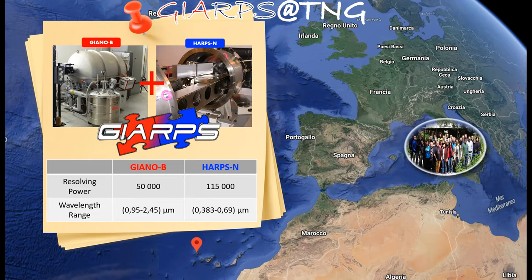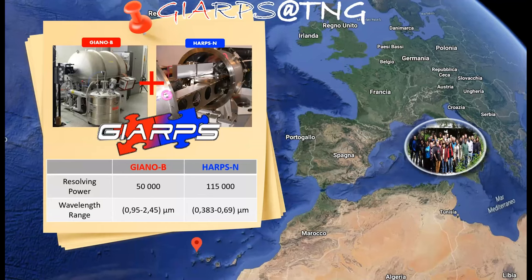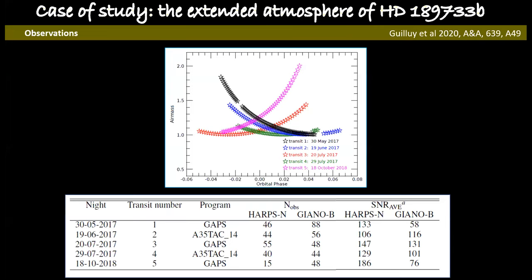Together, these two spectrographs give us a wide wavelength range between 0.38 and 2.45 micrometers, with a small gap between 0.69 and 0.95 micrometers. We have observed HD 189733b for five nights. And this is the log of our observation.